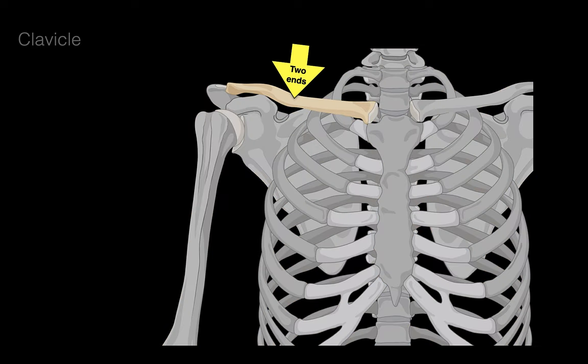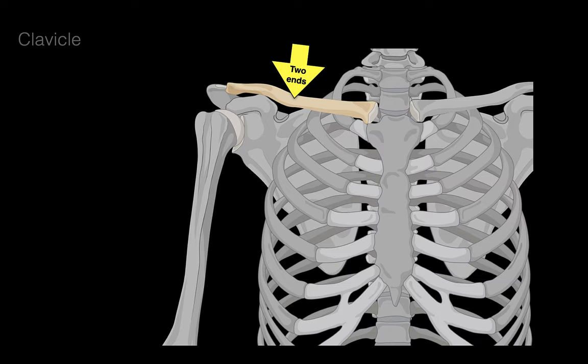The clavicle has two ends. The lateral end is called the acromial end because it articulates with the acromion, forming the acromioclavicular joint. Medially, the medial end is called the sternal end, which articulates with the sternum, forming the sternoclavicular joint, which has a very important structural function.